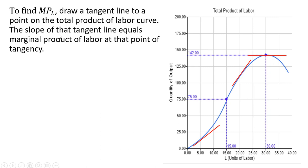To find the marginal product of labor, draw a tangent line to a point on the total product of labor curve — the slope of that tangent line equals the marginal product of labor at the point of tangency. The marginal product of labor is increasing in the first section as the slope of the total product of labor increases. In the middle section, the slope of total product of labor falls, so the marginal product of labor falls. Right where output is maximized, the marginal product of labor is 0, and the slope of the total product of labor function is also 0.